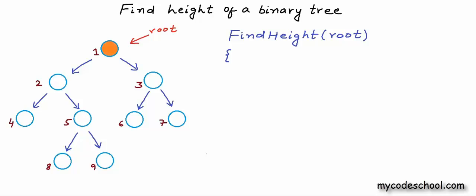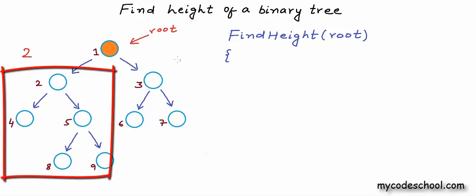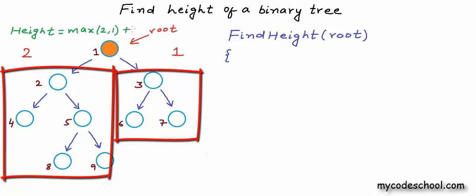For the root node in this tree, height of the left subtree is 2 and height of the right subtree is 1. So height of the root node would be greater of these two values plus 1, plus 1 for the edge connecting the root node to the subtree. So height of the root node which would also be the height of the tree is 3 here.